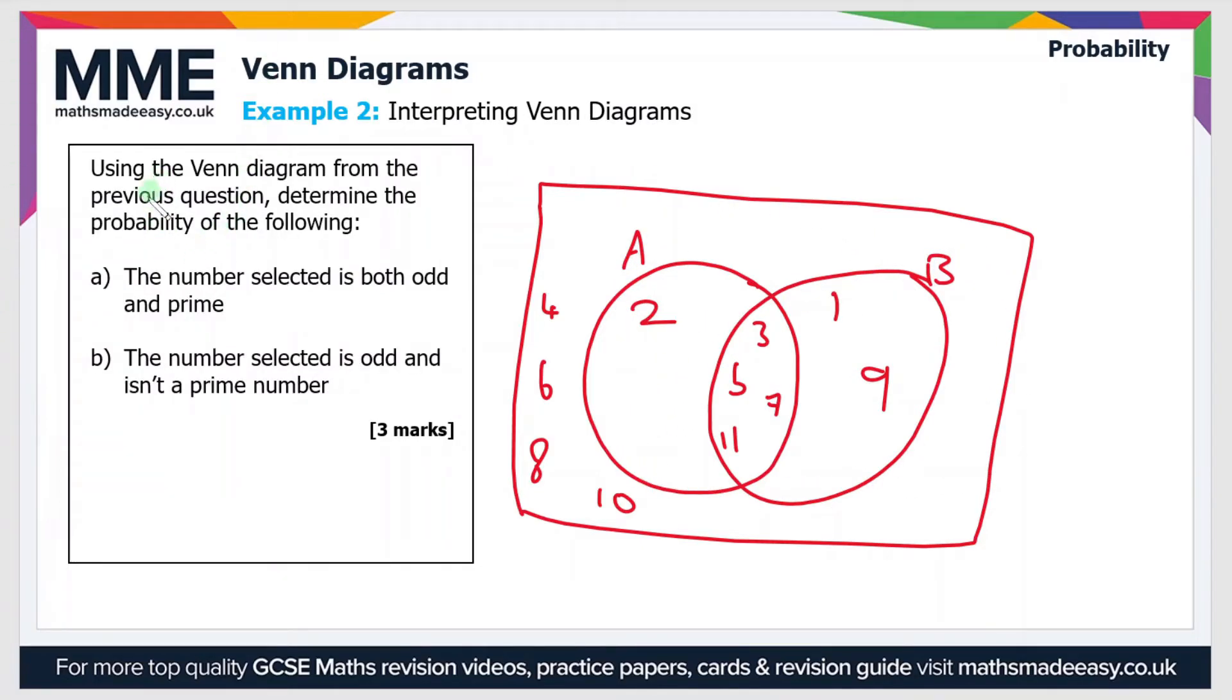So the second part then, using the Venn diagram from the previous question - so I've just copied it across - determine the probability of the following. So part A, the number selected is both odd and prime. So A was prime numbers, B was odd numbers. So odd and prime is the intersection.